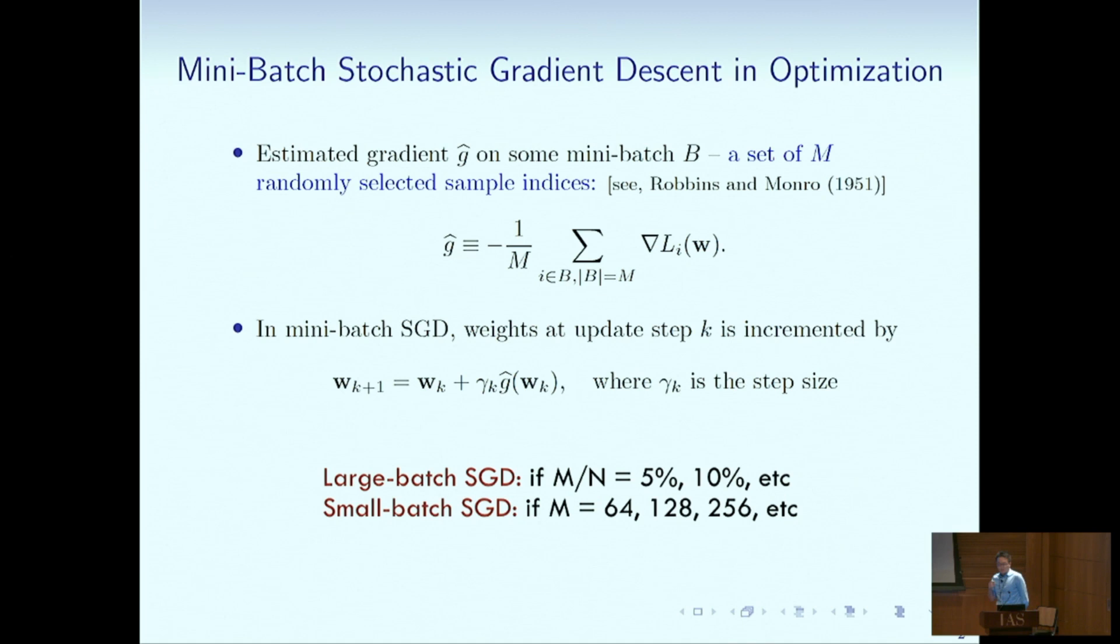Quick recap of large batch SGD. We use a mini batch to calculate the gradient. Large batch, like, choose 10 percent of total samples to calculate the gradient. The small batch, however, use like 64 samples every time.